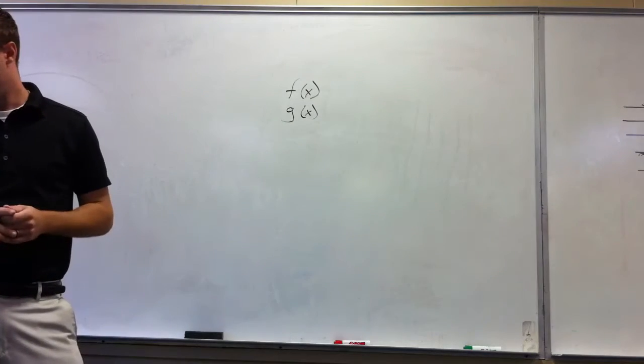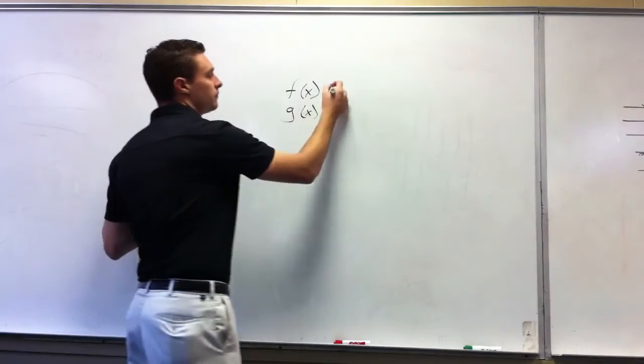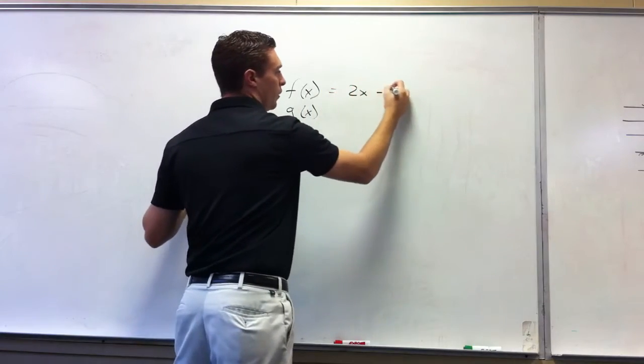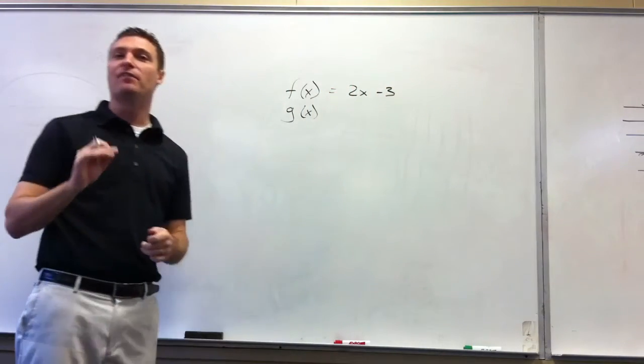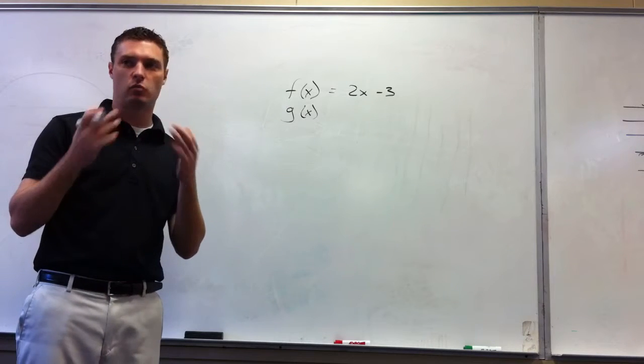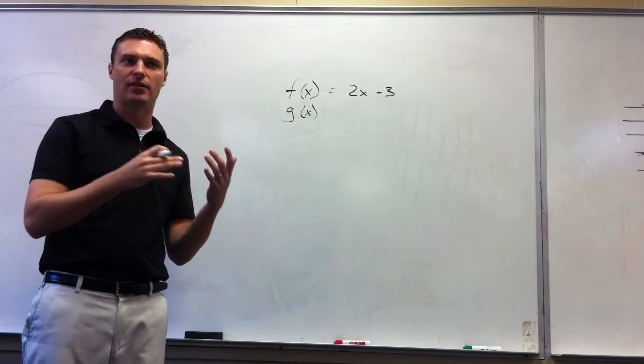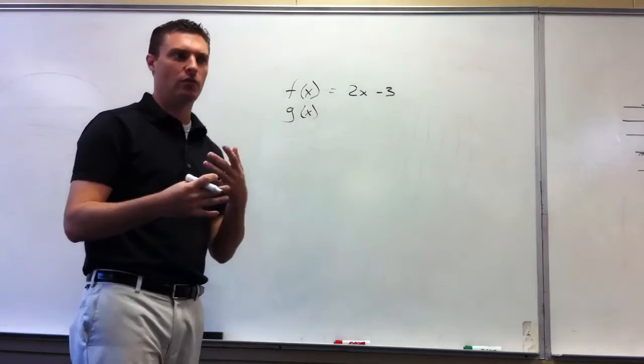Okay, so 2x minus 3. What you need to understand is that f of x is functionally the same as y. This is another one of those things that right now doesn't make a lot of sense, but as we move on will make more sense.